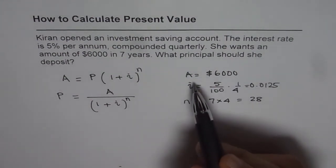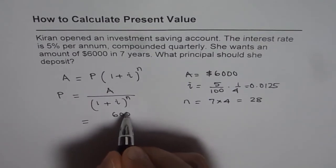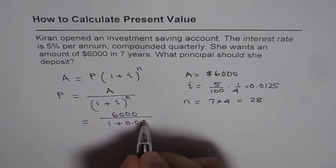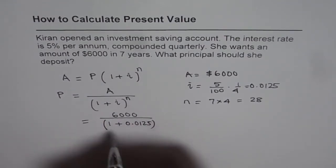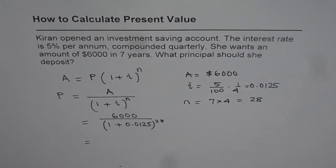So these are the values for A, i, and n. So present value should be 6,000 divided by (1 plus 0.0125) to the power of 28. So let's calculate using calculator. So we have 6,000 divided by, within brackets, 1 plus 0.0125, bracket close, to the power of 28. That gives us 4237.31.